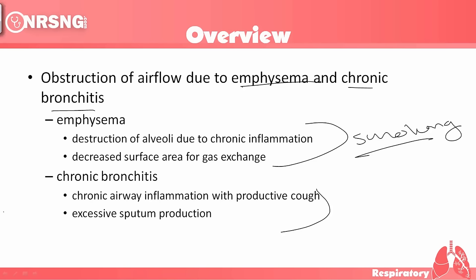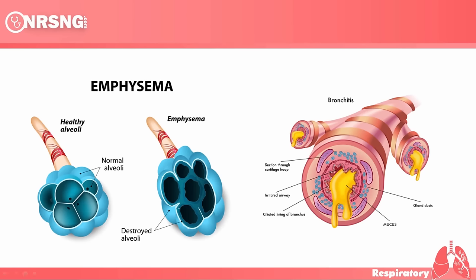We have these destroyed alveoli so we're not exchanging gas appropriately, and then we also have this excessive sputum production and airway inflammation, so it becomes very difficult for these patients to breathe. In emphysema, these alveoli become destructed and gas exchange does not happen as it should in a healthy individual. The patient is not able to swap CO2 for O2, and because of this, they're going to have higher levels of CO2.